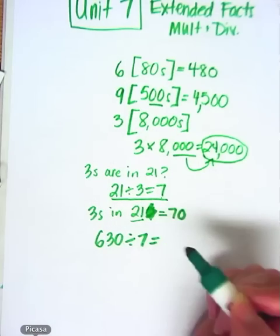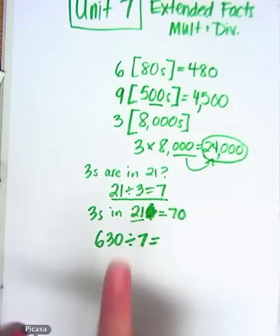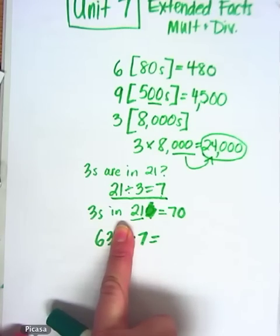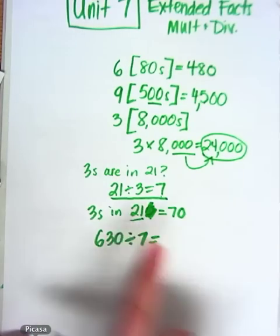So how about six hundred thirty divided by seven? Oh, my goodness. I can't do that in my head. But actually, you can. Cover the zero. And you see that it's sixty-three divided by seven. Sixty-three divided by seven we know is nine.